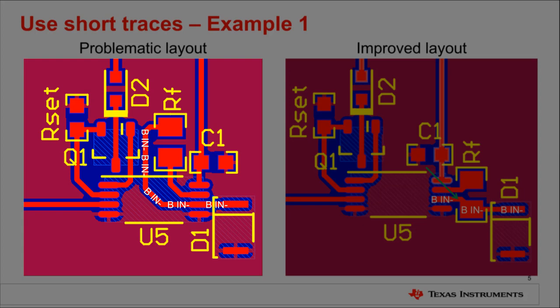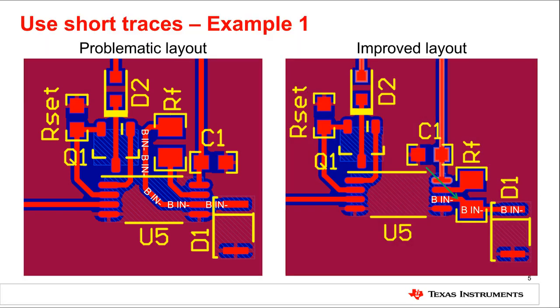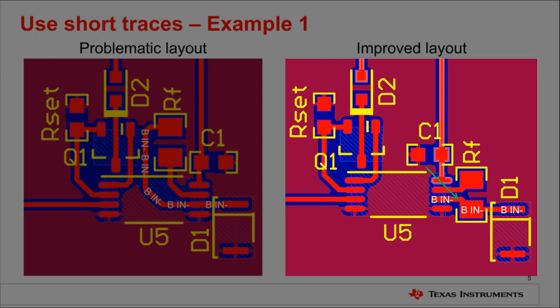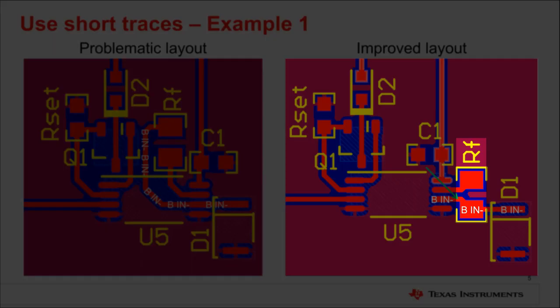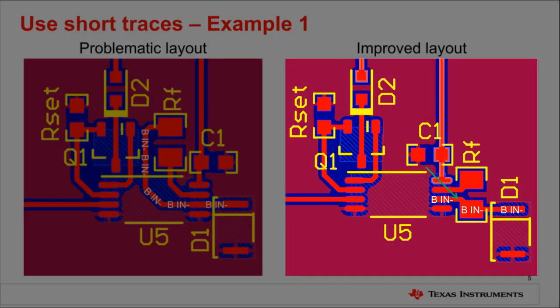However, the inverting input is usually thought of as a sensitive node, so it's a good idea to shorten this trace if at all possible. On the right, you can see that the issue of the long trace can be resolved by repositioning the RF component such that the trace now has a shorter path to its pin.